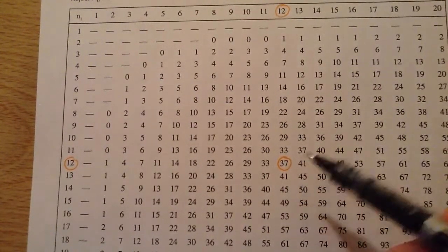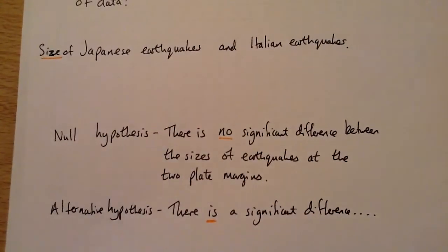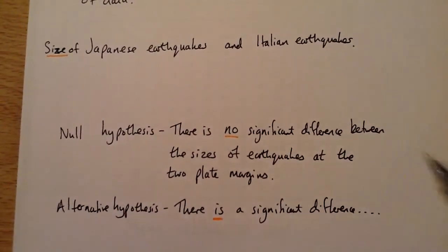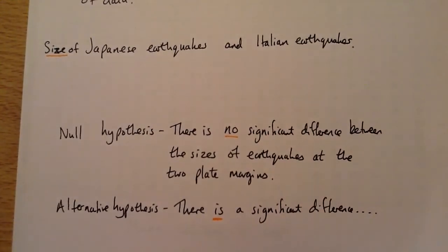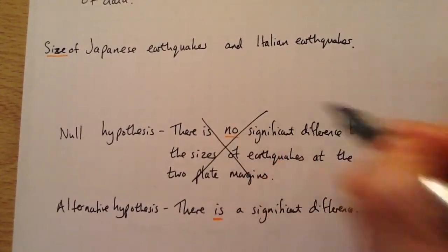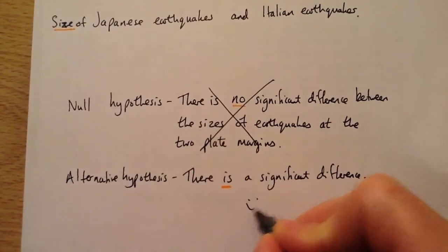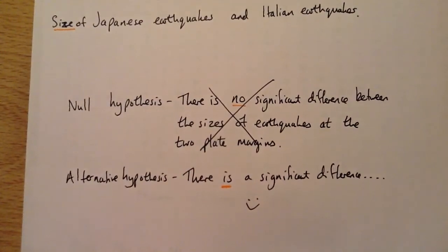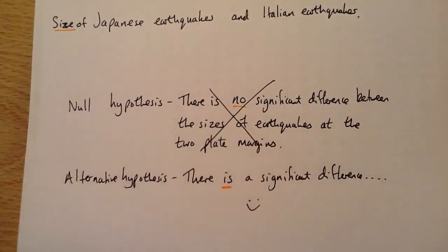Our null hypothesis stated there is no significant difference between the sizes of earthquakes at the two plate margins — we can reject that. This means we can accept the alternative hypothesis that there is a significant difference between the sizes of earthquakes at the two plate margins.